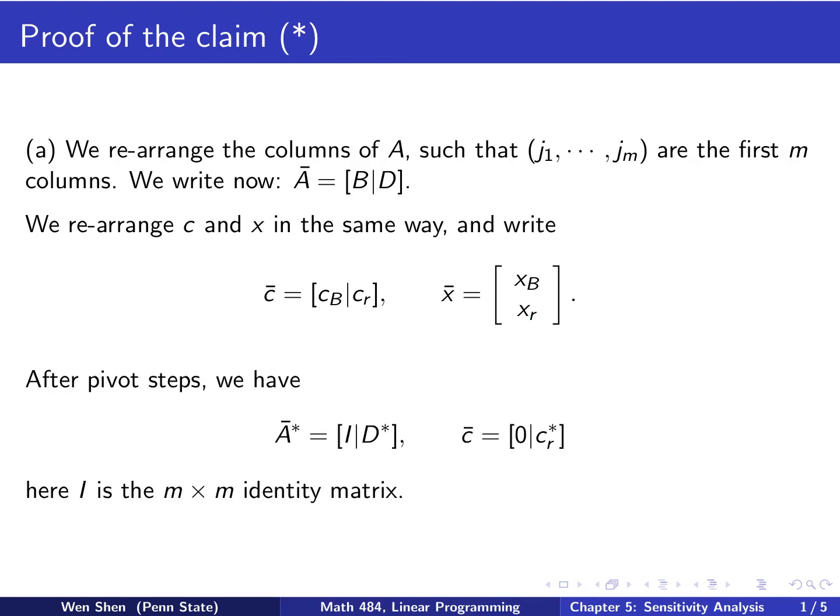With the index arranged in this way, after pivoting, the rearranged A star would consist of, on the left, an identity matrix I which is m times m, and then the remaining part D star. The c vector will have all zero under the basic variables, and then the remaining part cr star. With the bar on top, that means the index is rearranged.